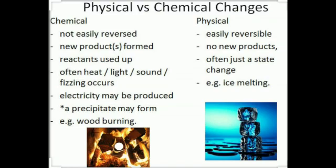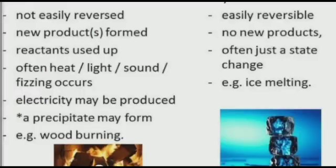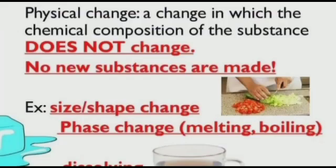Difference between physical and chemical change: A chemical change is not easily reversed, while a physical change is easily reversible. In a chemical change, a new product is formed; in a physical change, no new product is formed. In a chemical change, reactants are used up; often heat, light, sound, or other energy changes occur. In a physical change, often just the state changes. Electricity may be produced in chemical changes. Example: wood burning is a chemical change; ice melting is a physical change.